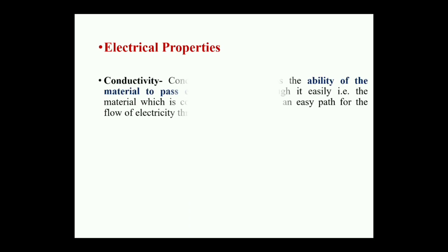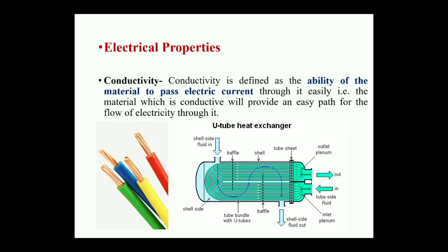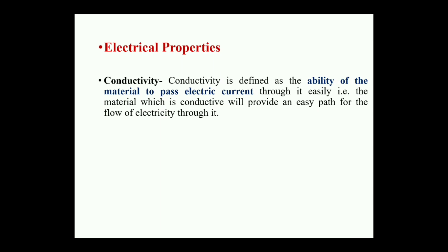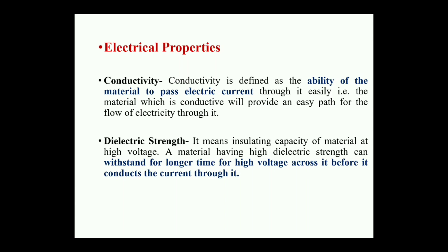Electrical properties: conductivity is the ability of the material to pass electric current. Generally, copper has the highest conductivity and is used to pass electricity or run machine components. High-conductive materials are used in AC systems and heat exchangers. Electric strength, or the reverse of conductivity, is the capacity of a material to withstand high voltage across it for a longer time before it conducts current — generally acting as insulating material provided on wire materials.